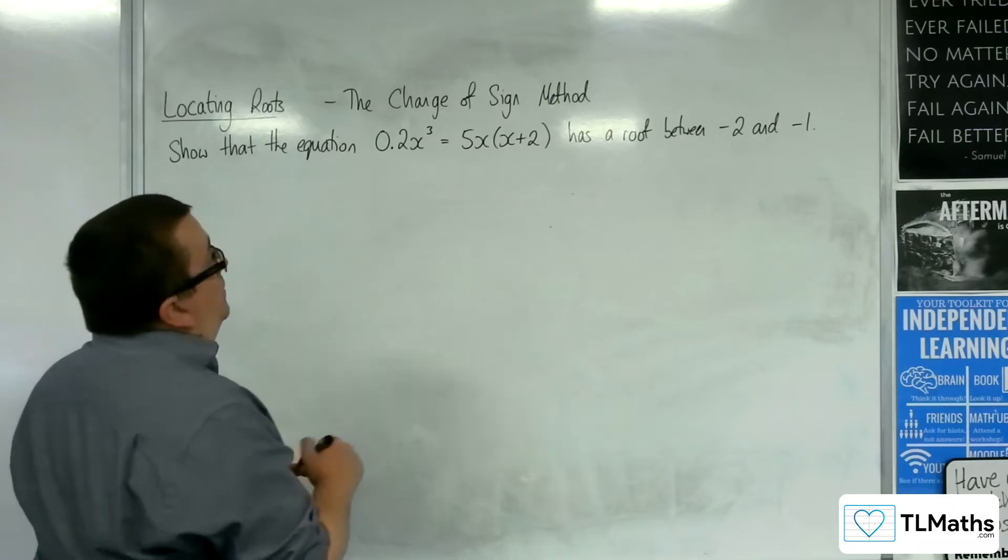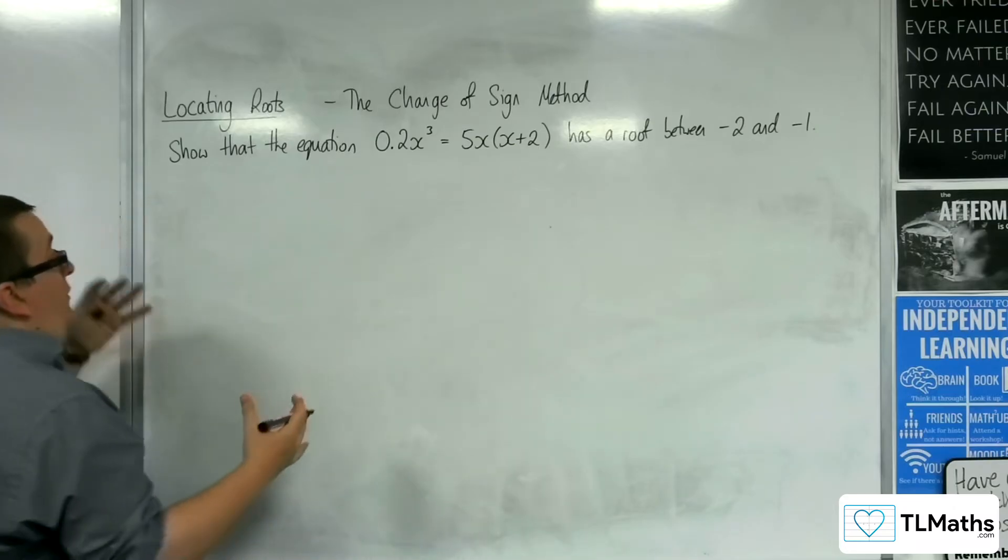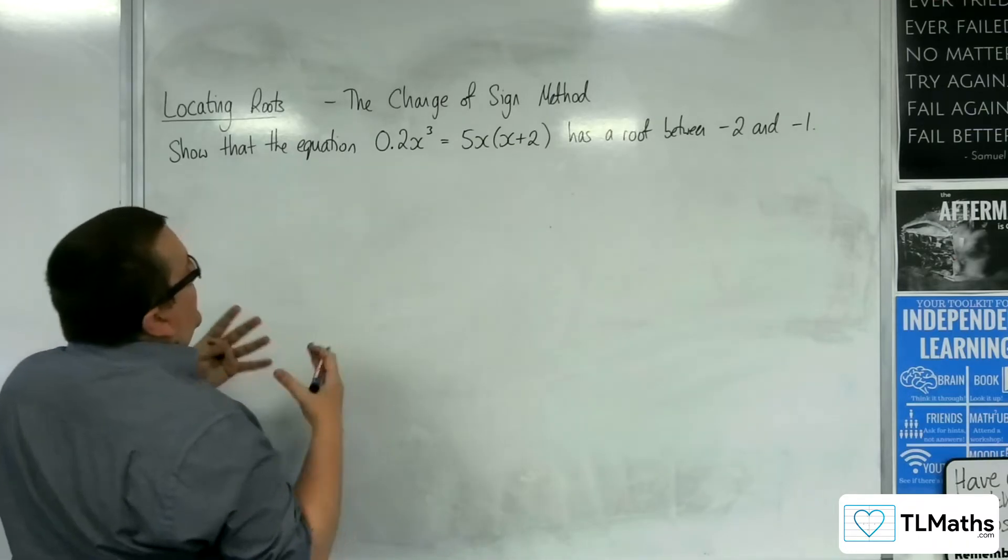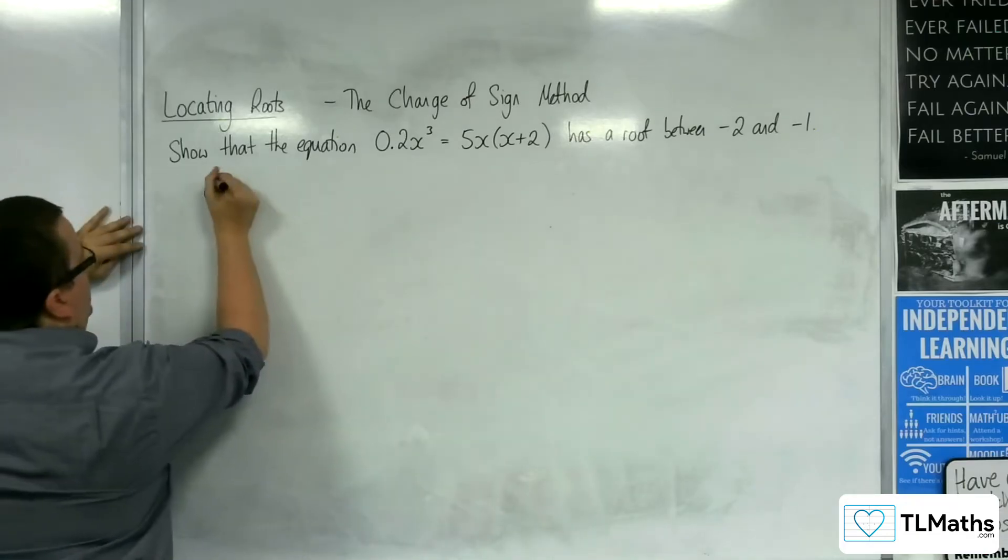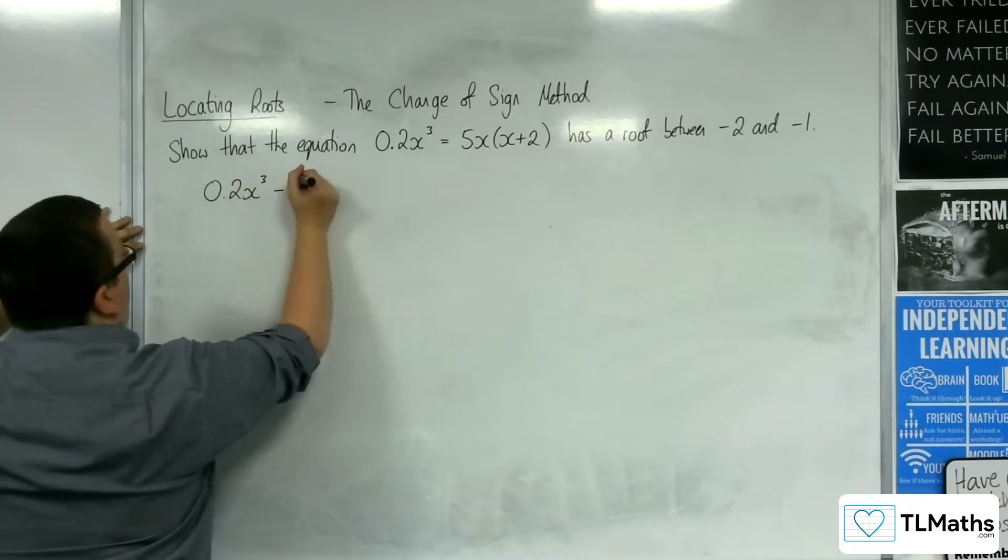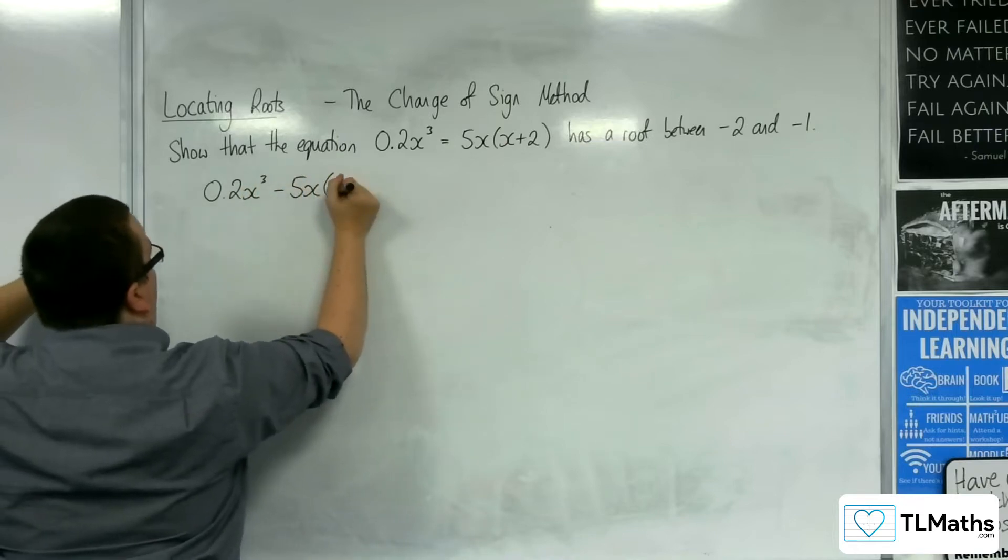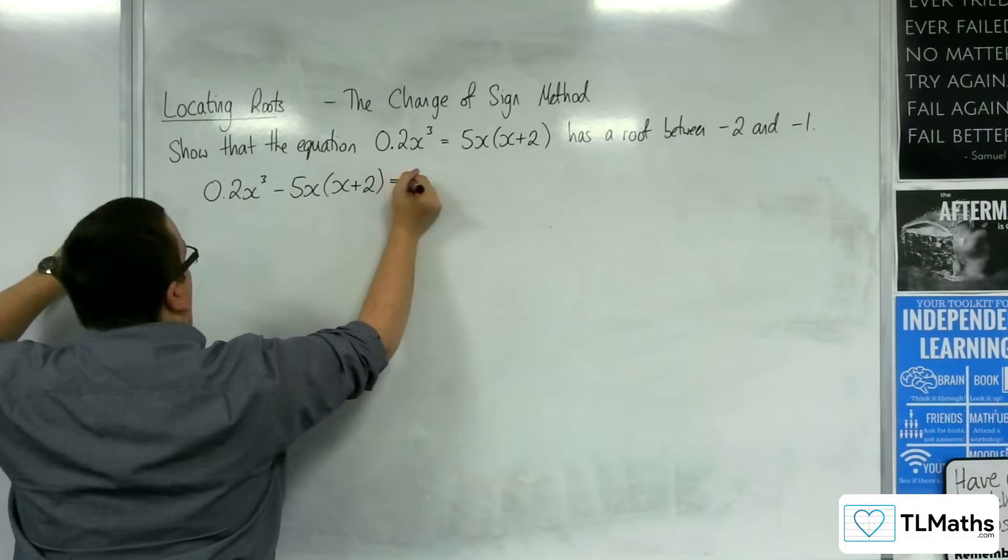The first thing to do is you want to get everything onto one side of the equal sign. You want it equaling to 0. So I'm going to write it as 0.2x³ - 5x(x+2) = 0.